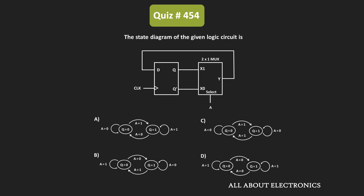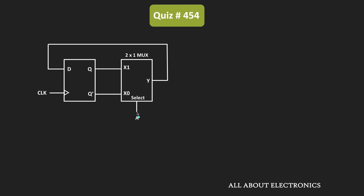In this question, we have been given this logic circuit and we have been asked to find which of the following is the correct state diagram for the given circuit. As you can see, the output of the D flip-flop is given to the multiplexer. The given multiplexer is a 2x1 multiplexer.